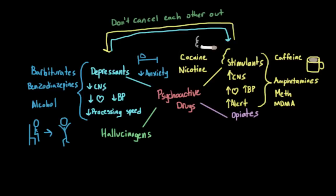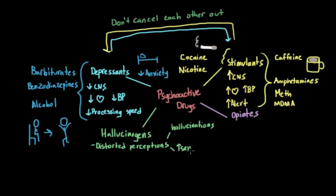The next class of drugs are hallucinogens, which are sometimes referred to as psychedelics. These drugs cause individuals to experience distorted perceptions, and this can include hallucinations — seeing or hearing things that are different from how things actually are. They can also cause heightened sensations that feel real but are actually different from what is really going on. These drugs aren't stimulants or depressants, even though they can give people a lot of energy or sometimes calm them down. Instead, they are classified by the perceptual changes they bring about.